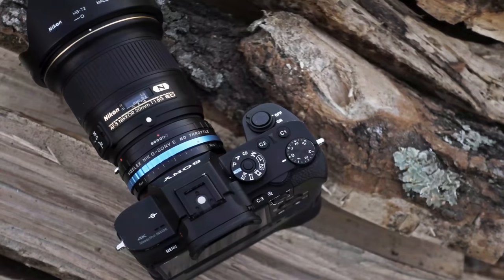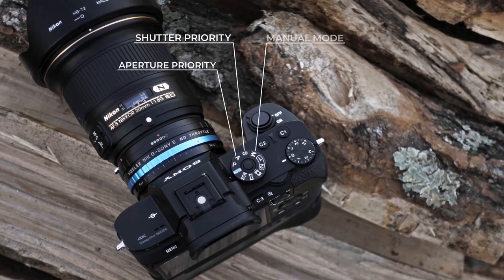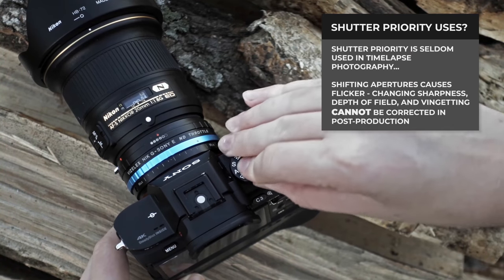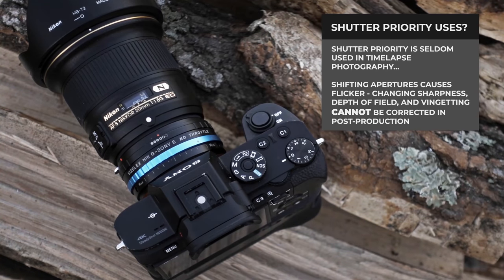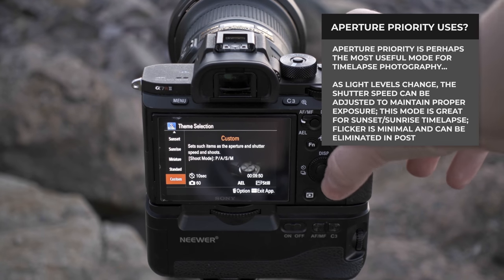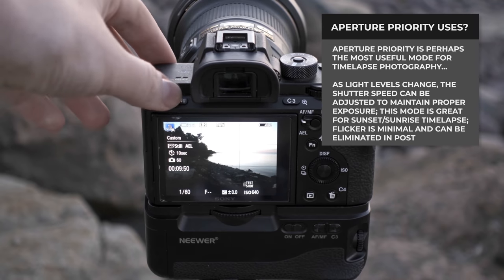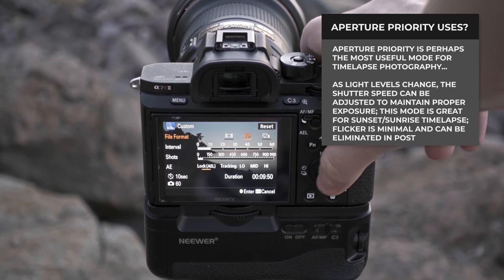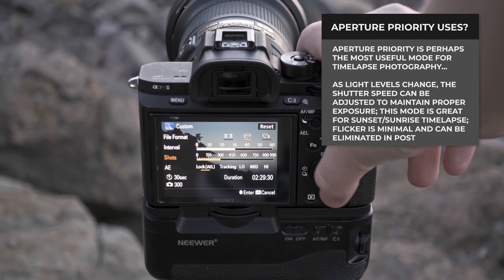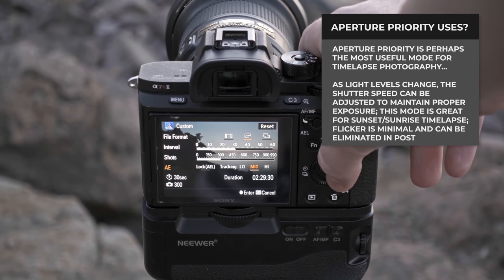Besides auto mode, there should be three other shooting modes on your camera: shutter priority, aperture priority, and manual. I always recommend leaving auto ISO off if your camera has it. Shutter priority allows you to set shutter speed manually while leaving aperture up for the camera's computer to decide — in timelapse, this is seldom used. Aperture priority, however, is a great tool for capturing drastically changing light conditions. By keeping aperture constant and letting the camera determine the correct shutter speed, sunsets can be easily photographed by setting your aperture and ISO to the value of your ending exposure and letting shutter speed grow longer as dusk turns to night. Make sure your interval is long enough and your initial shutter speed is fast enough to cover up to 10 stops of light change in your session.